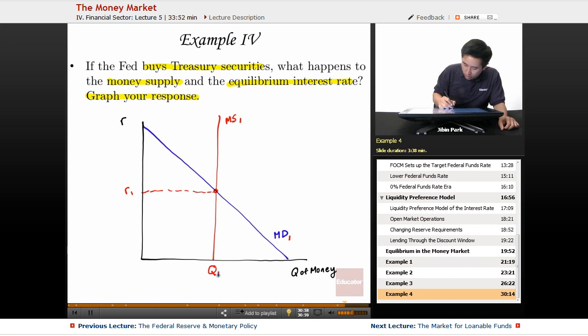Then this is quantity of money q1 right here. If the Fed buys government securities, try to recall what happens. In the previous example, when the Fed sells government securities, it shrinks the money supply. Well, if the Fed buys government securities, it increases the money supply.